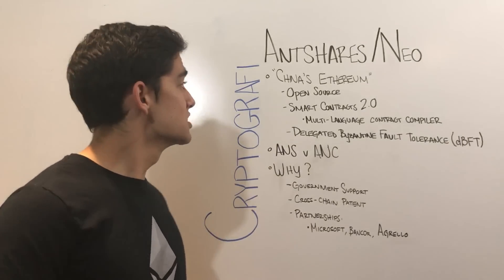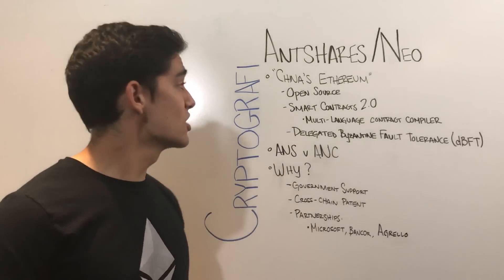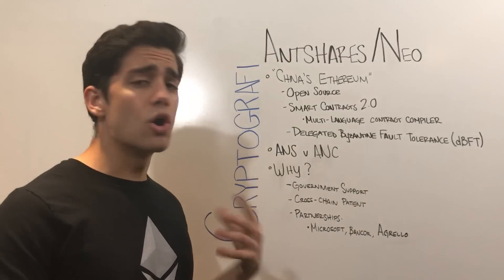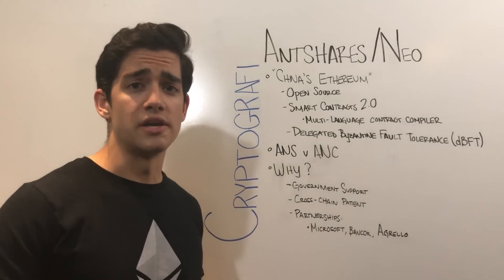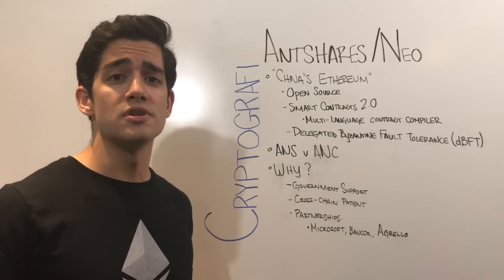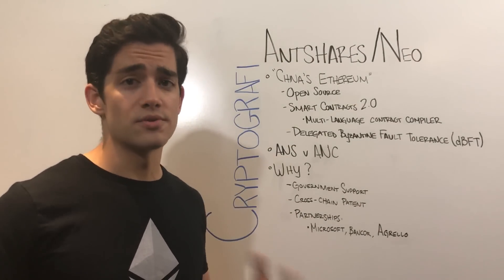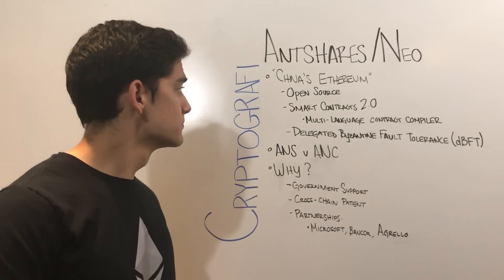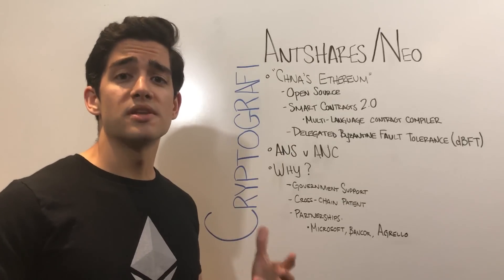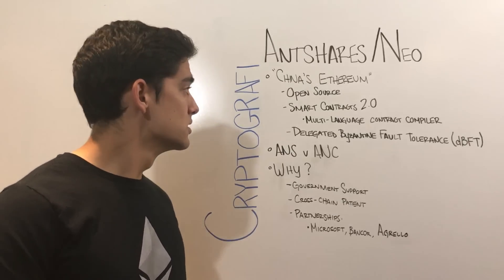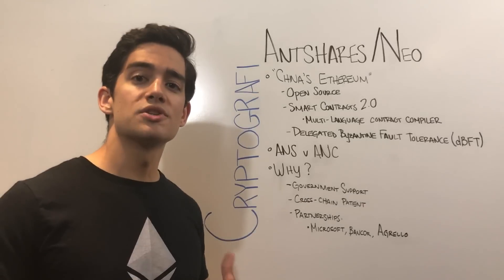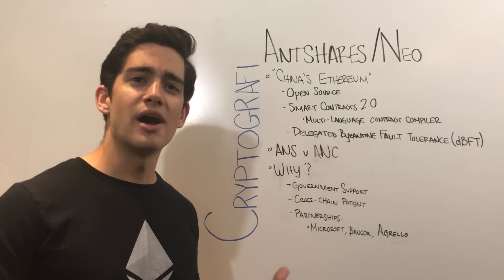So what is NEO? It's often described as China's Ethereum. It's an open source blockchain, which means that it encourages collaboration and contribution from developers around the world. Additionally, they're piloting something they call Smart Contracts 2.0, and it can be described as a multi-language contract compiler.